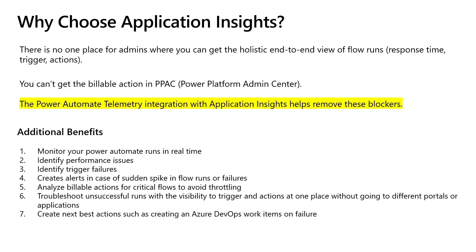As you can see, there's no one place to get a holistic end-to-end view of the Power Automate service. For example, you can't get billable actions in PPAC, and to troubleshoot issues you need to go to Makers Experience and look for specific runs. This is where this integration comes into the picture — it helps remove these blockers. In addition, you can monitor flows in real time, identify performance issues, identify trigger failures, create alerts, analyze billable actions for critical flows, troubleshoot unsuccessful runs with visibility to triggers and actions in one place, and create next best actions such as creating a dev work item in case of failures.